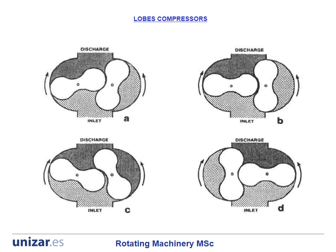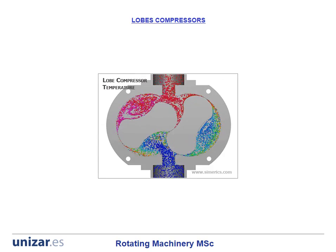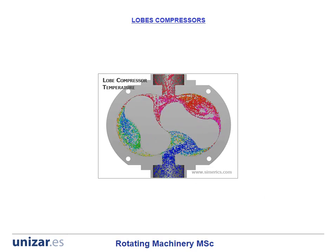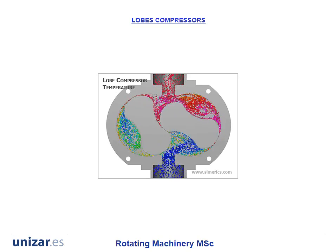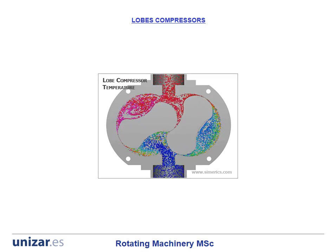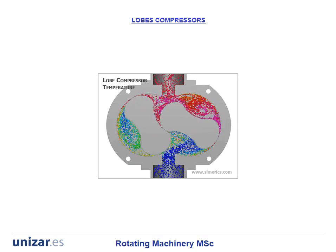Here, in this image, you can see how the volumetric compressor works and how the gas comes from the inlet to the outlet of the compressor, increasing the pressure. You can see a representation of how the lobes work in the compressor. From the lower side, the gas goes into the compressor and the lobes compress this gas until the discharge of the machine, where the pressure is increased as well as the temperature of the gas.